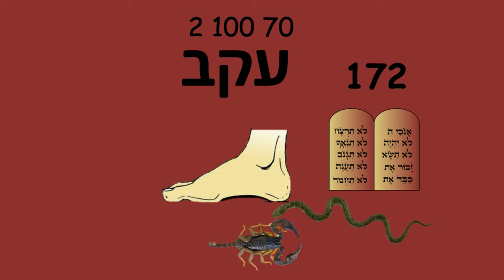Look at Luke 10:19: 'Behold, I give you power to tread on serpents and scorpions.' So here are serpents and scorpions — and what do they attack? Your heel. That's what they attack. 'You'll have power over the enemy and nothing shall by any means hurt you.' We know from Genesis that Satan wants to bruise your heel. Satan's whole goal is to ruin your walk with God. But if your heel belongs to God and you walk in his ways, you're safe.